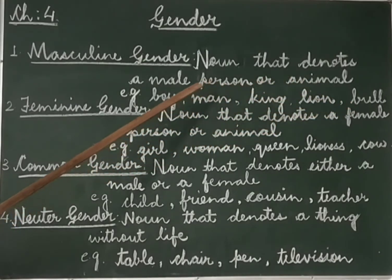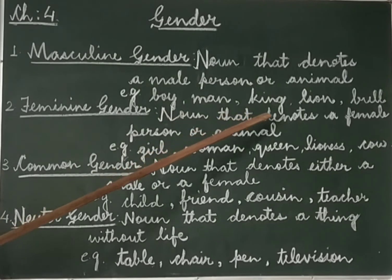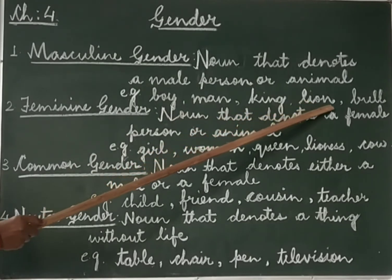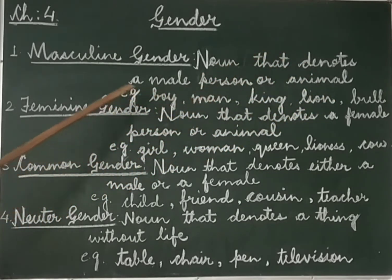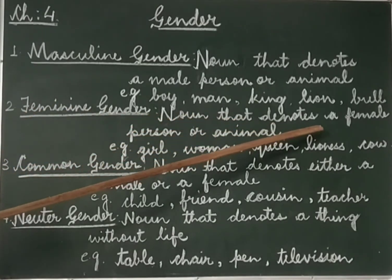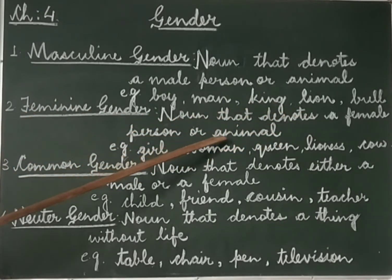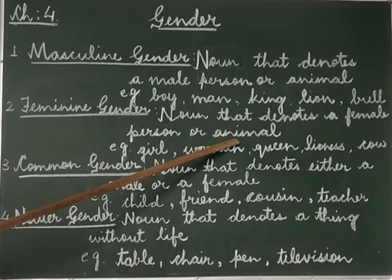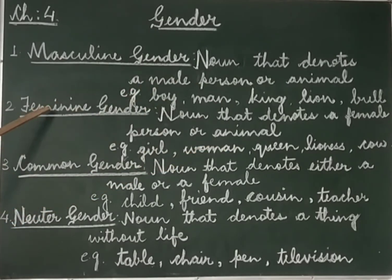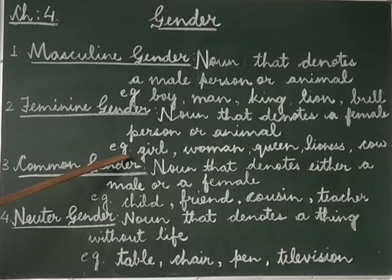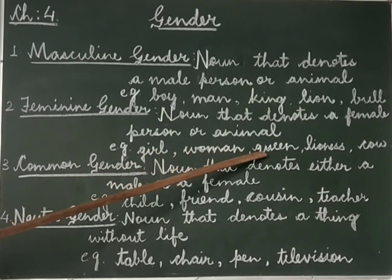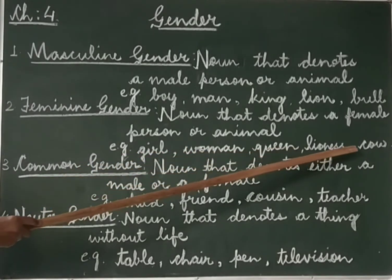They are either a male person or animal. Now next is feminine gender. A noun that denotes a female person or animal is said to be feminine gender. For example: girl, woman, queen, lioness, cow.